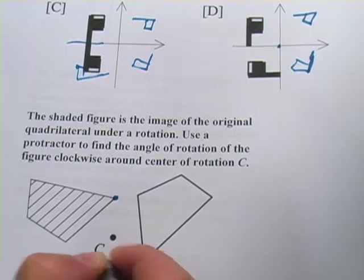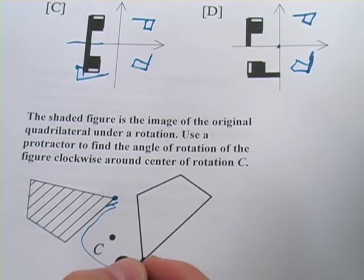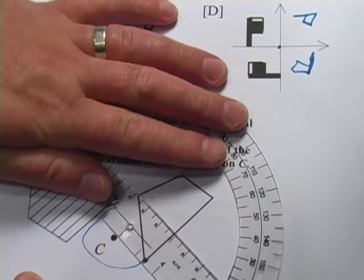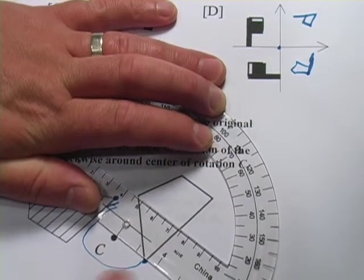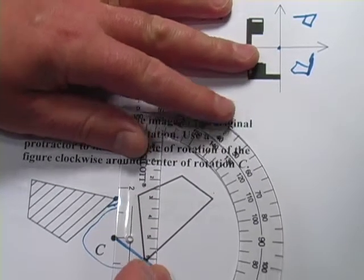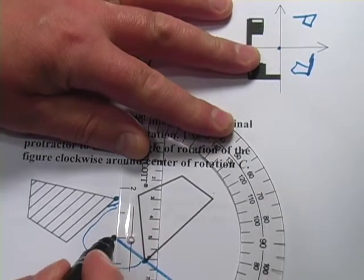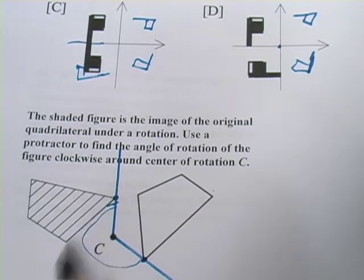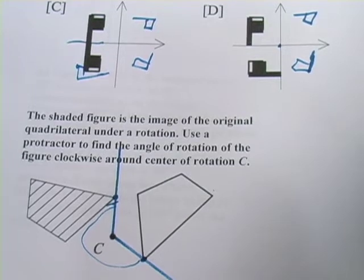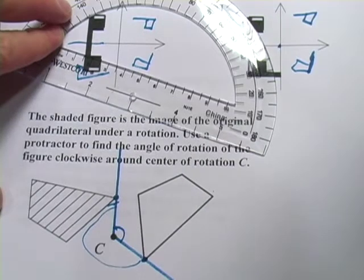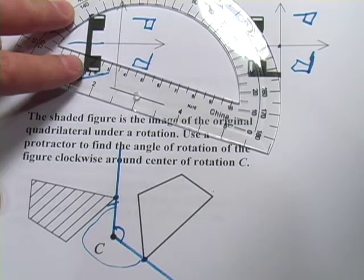So somehow this has been rotated and they said clockwise. So if we're going to do this clockwise, it would go around like that. So what I'm going to do is I'm going to use my protractor to draw a line from point C to that point I selected and then to this corresponding point on the figure after it's been rotated. And it looks like this is the number of degrees of the angle of rotation, which is more than 180.